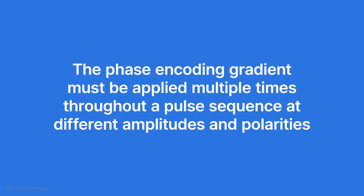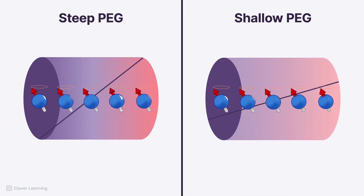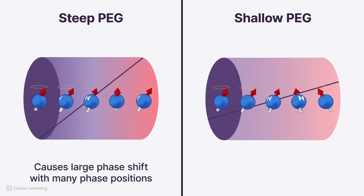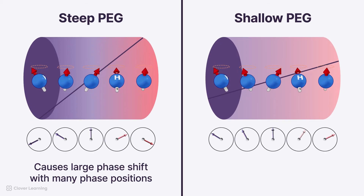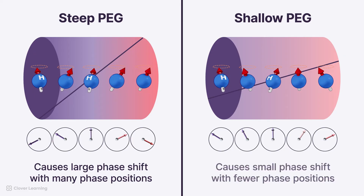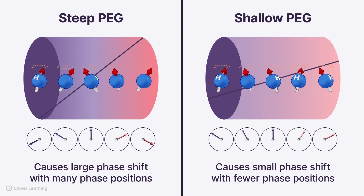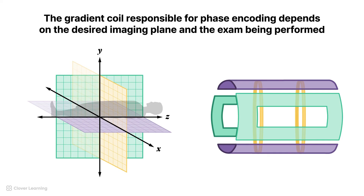It is important to note that the phase encoding gradient can be applied multiple times throughout a pulse sequence at different amplitudes and polarities, which will be discussed in more detail in a different lesson. A steep phase encoding gradient causes a large phase shift with many phase positions, like 8pm to 4am on a clock face. A shallow phase encoding gradient causes a small phase shift with fewer phase positions, like 11pm to 2am on a clock face. In an MRI scanner, the phase encoding is performed by specific gradient coils, and the coil responsible depends on the desired imaging plane and the exam being performed.